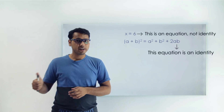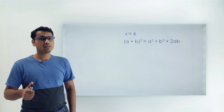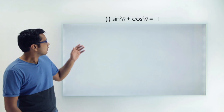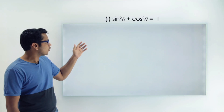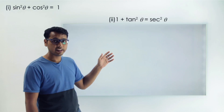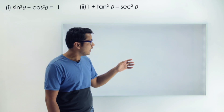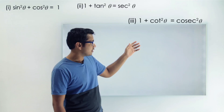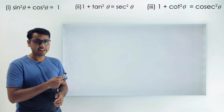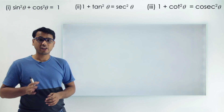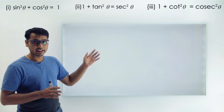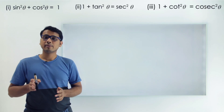In trigonometry we will learn about three different types of identities. Those are: sin square theta plus cos square theta equals to 1; then 1 plus tan square theta equals to sec square theta; and lastly 1 plus cot square theta equals to cosec square theta. All these three identities are nothing but different forms of the Pythagorean theorem. Let's understand how we get these identities by using the Pythagorean theorem.